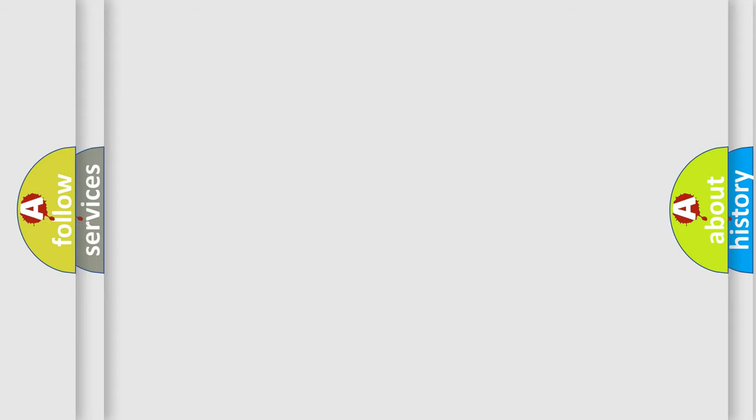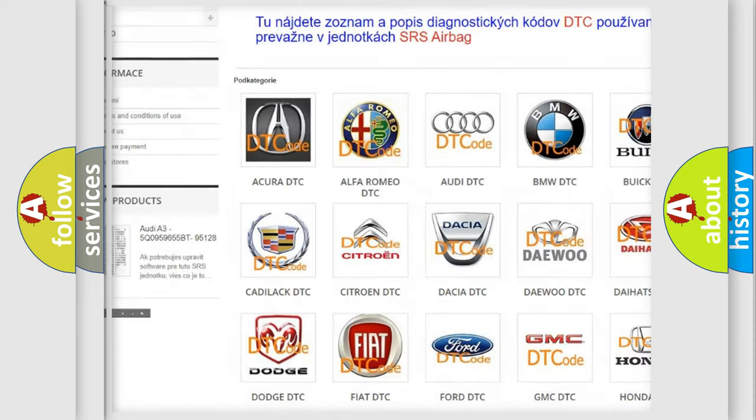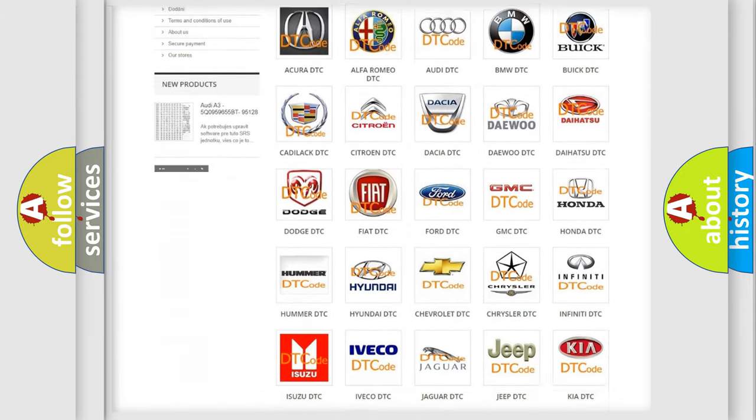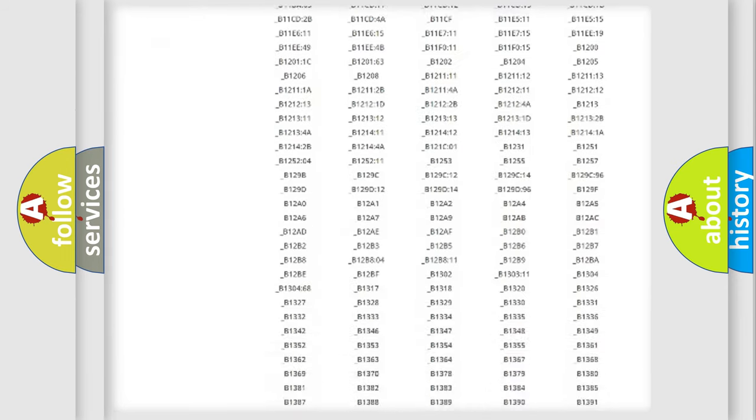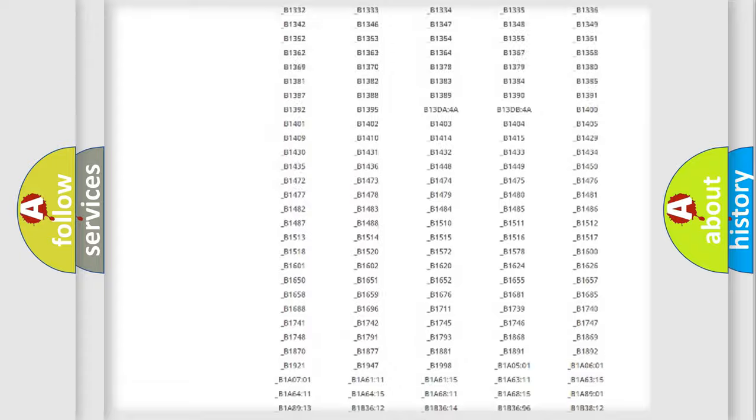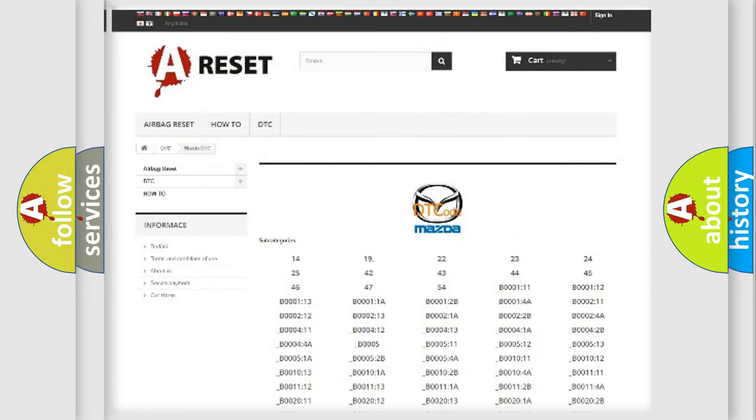Our website airbagreset.sk produces useful videos for you. You do not have to go through the OBD2 protocol anymore to know how to troubleshoot any car breakdown. You will find all the diagnostic codes that can be diagnosed in Mazda vehicles and many other useful things.